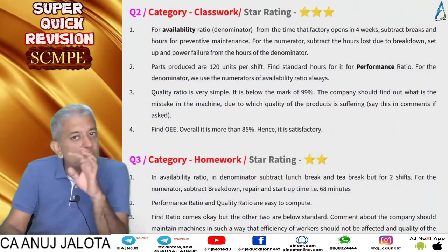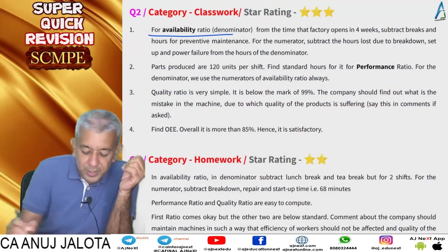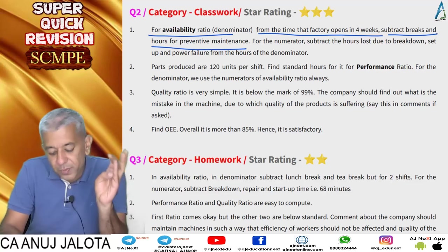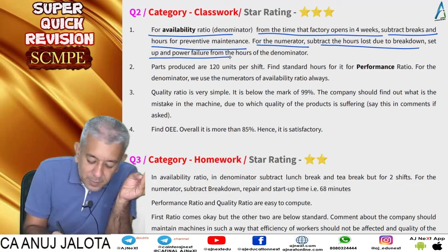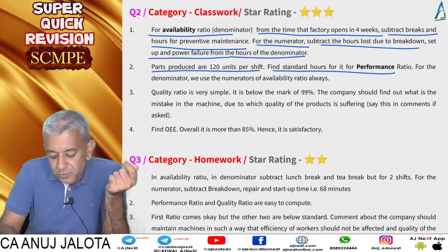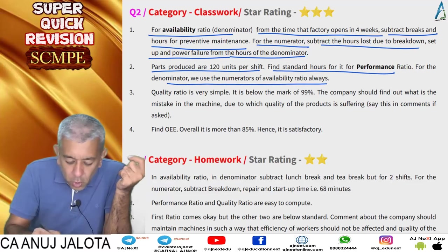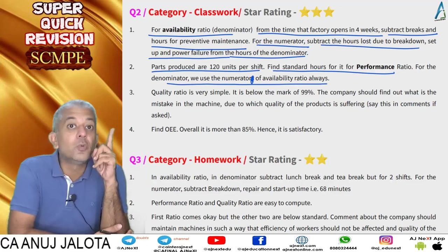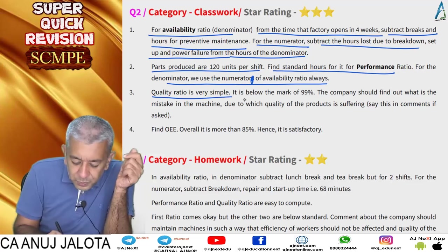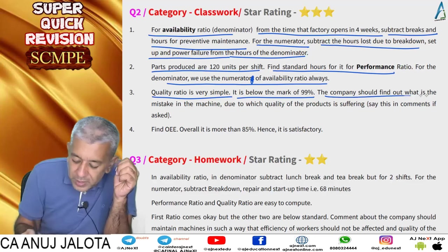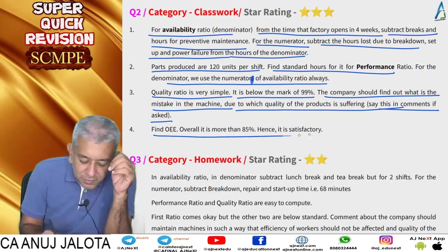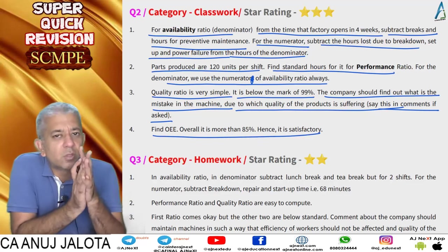To summarise Question 2: for the availability ratio denominator, subtract breaks and preventive maintenance hours from factory open hours. For the numerator, subtract hours lost due to breakdown, setup, and power failure. For performance ratio, the numerator of the availability ratio is always the denominator of the performance ratio. The quality ratio is below 99%, meaning quality is not good — comment on this if asked. Overall OEE is above 85%, so it is acceptable overall.